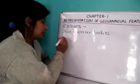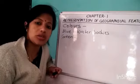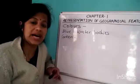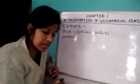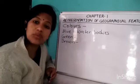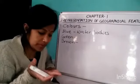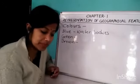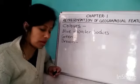Green represents forests, orchards, shrubs, grassland, and trees. Brown color is used for showing elevated landforms like mountain ranges, highlands, sand dunes, and stony areas.